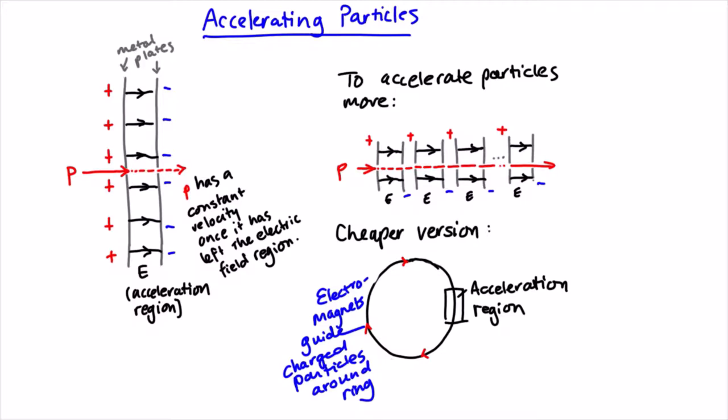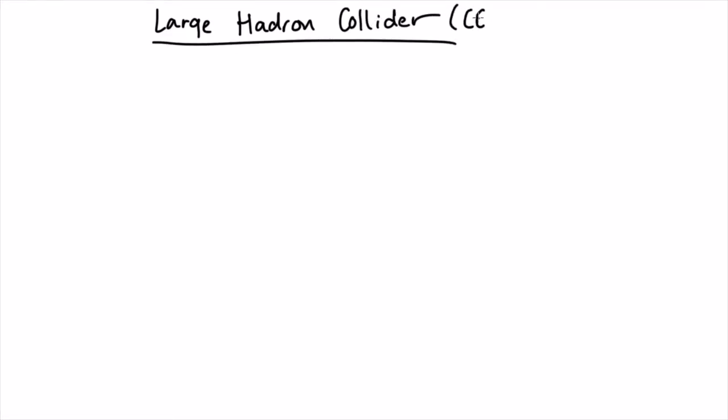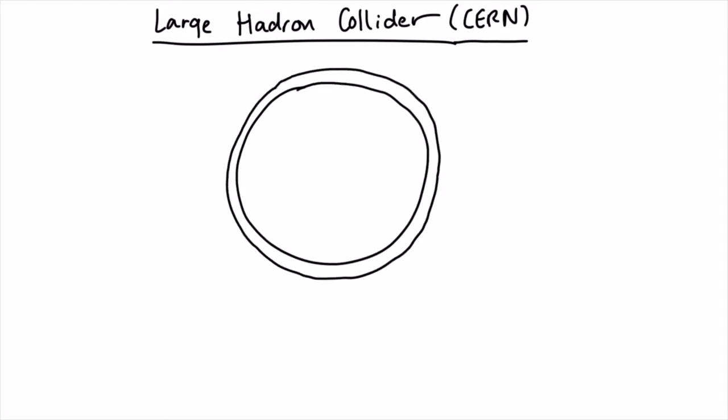What you generally have is something like this. So you have your ring, you have two vacuum tubes in which the particles actually travel. Each of those vacuum tubes represents a direction for those particles.